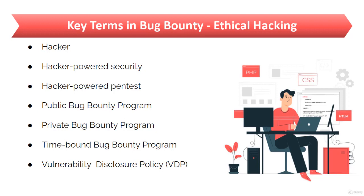There are three types of bug bounty programs: public, private, and time-bound. A public bug bounty program is an open program where any hacker can participate for a chance at a bounty reward. A private bug bounty program is a limited access program where selected hackers are invited to participate for a chance at a bounty reward.